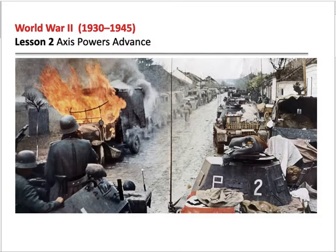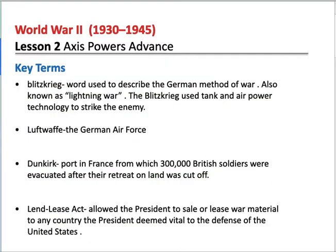We're going to look at a couple of things. Number one, some key terms in this section. The first one is Blitzkrieg. This was a new way of fighting that no one had ever seen before, and the Germans came up with it. They used their air power and their tanks. In World War I, they would have these lines, dig a trench, and battle each other, hoping to eventually kill more of the enemy and advance past their line.